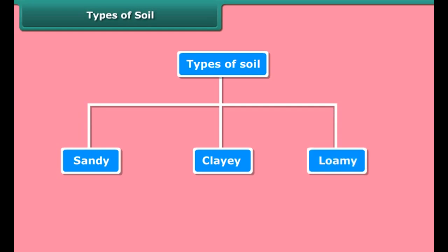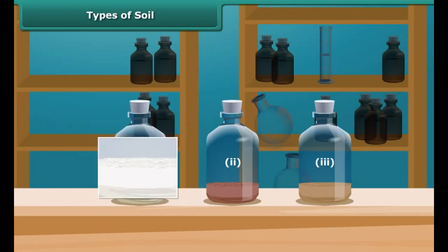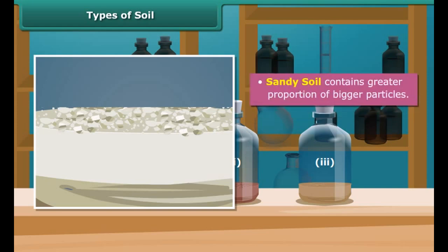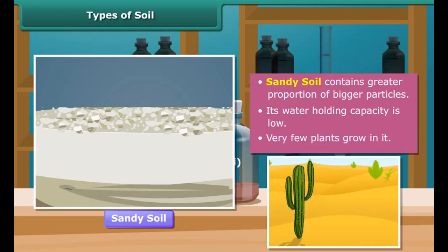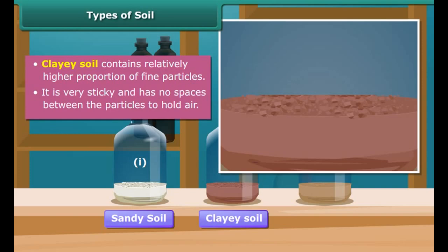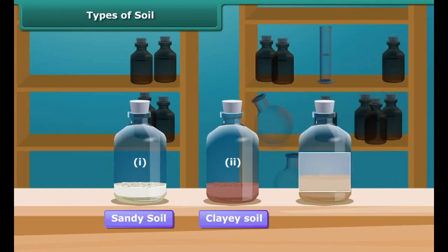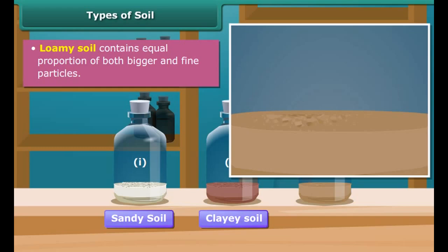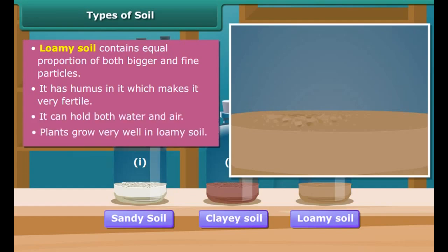There are basically three types of soil: sandy, clay and loamy. Let's take three samples of soil and examine them one by one. The first sample contains a greater portion of bigger particles, so this is sandy soil. Its water holding capacity is low, therefore very few plants grow in it. The second sample contains a relatively higher proportion of fine particles, so it is clayey soil. It is very sticky and has no spaces between the particles to hold air, therefore plants cannot grow properly in it. The third sample contains equal proportion of both bigger and fine particles, so it is loamy soil. Among all three soils, loamy soil has humus in it which makes it fertile. Also, it can hold both water and air, therefore plants grow very well in loamy soil.